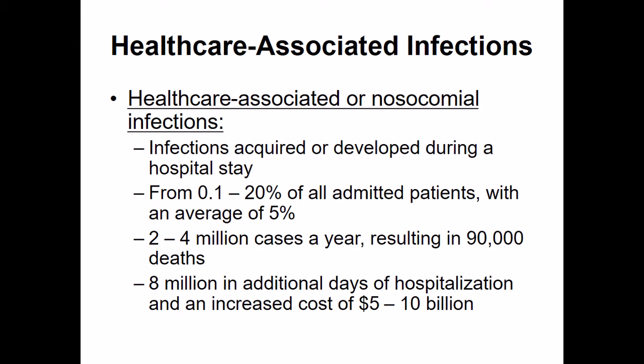Let's talk about healthcare-associated infections — infections you get from the hospital. The technical term for a hospital-associated or healthcare-associated infection is a nosocomial infection. These infections are actually relatively common. Approximately up to one-fifth of all admitted patients in a hospital will develop a nosocomial infection. The national average in the United States is that 5% of all patients that enter a hospital are going to get sick from being in that hospital.